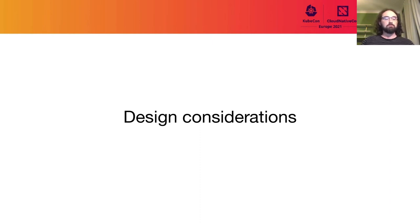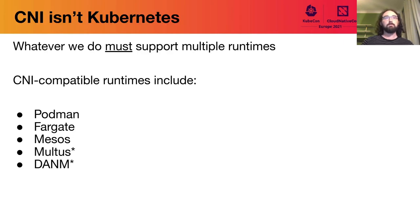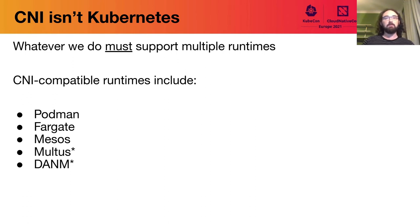Those were some of the sub-optimalities with CNI as it's been adopted in the real world. I want to briefly talk about some considerations we need to keep in mind as we look at what to do next. The most important consideration is that CNI is not Kubernetes — we need to support multiple runtimes and multiple deployment paradigms. Not all consumers of CNI want to create a Kubernetes-style single logical network across multiple nodes. CNI is vendor neutral and that's a good thing.